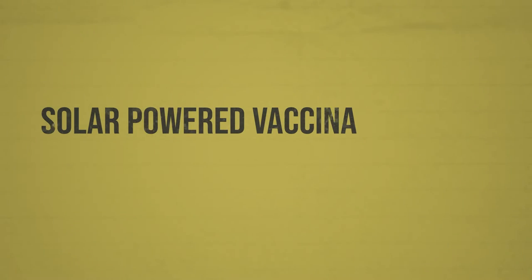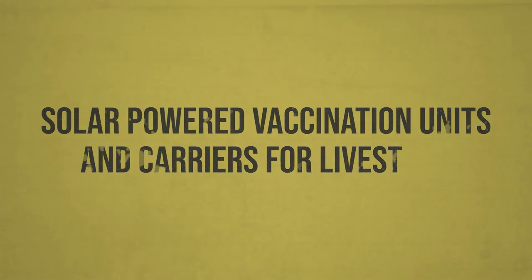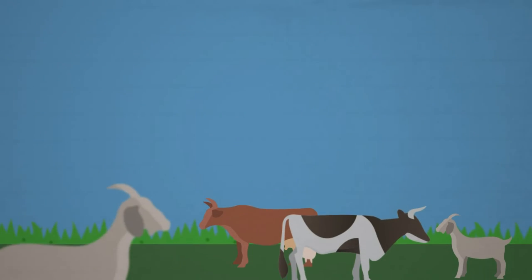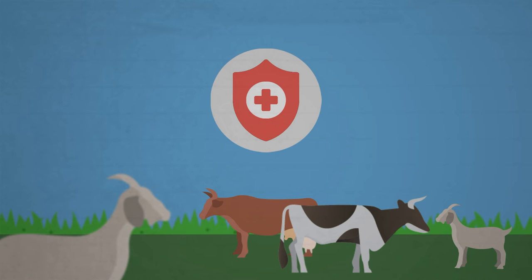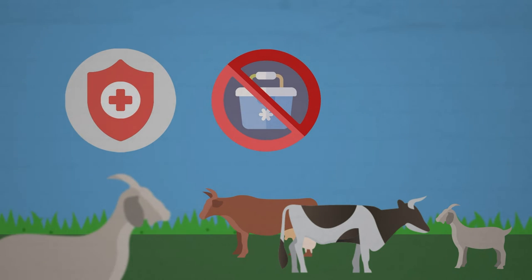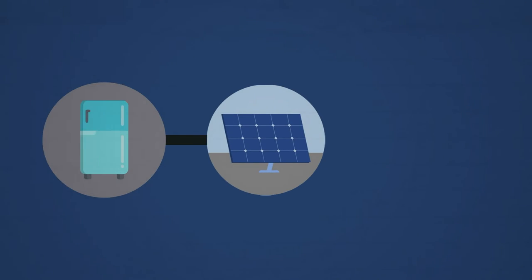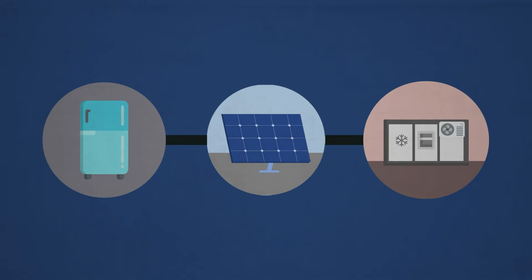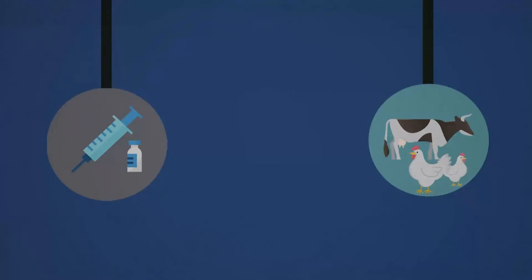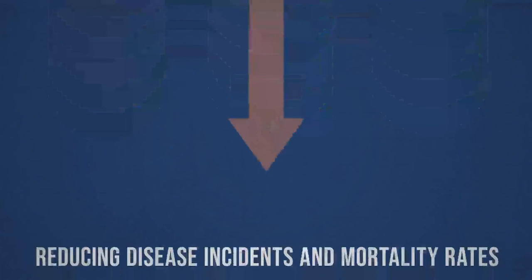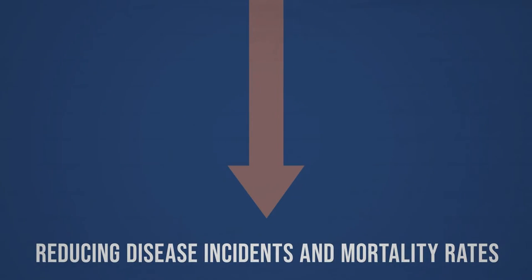Solar-powered vaccination units and carriers for livestock. CELCAP also addresses animal health security in rural areas where lack of reliable refrigeration makes it difficult to transport and store vaccines. Solar-powered refrigerated vaccination and carrier units allow communities to vaccinate their livestock regularly and timely, reducing disease incidence and mortality rates amongst livestock during dire times.